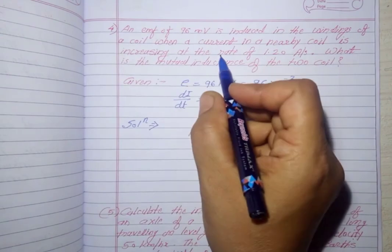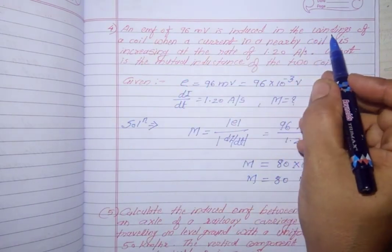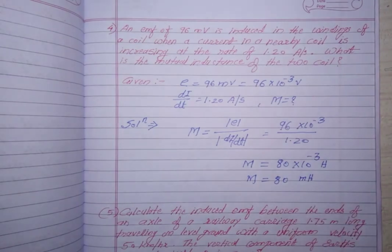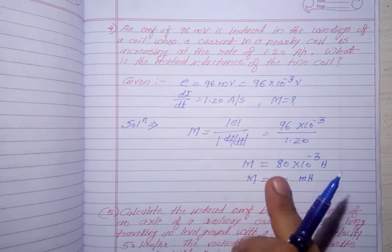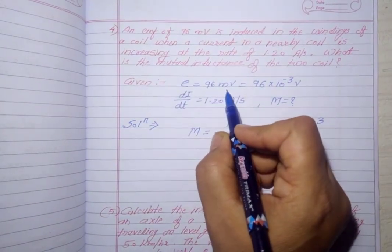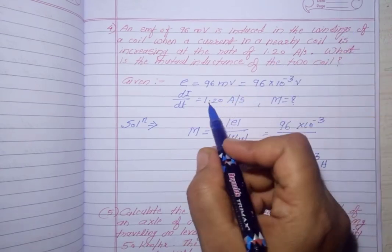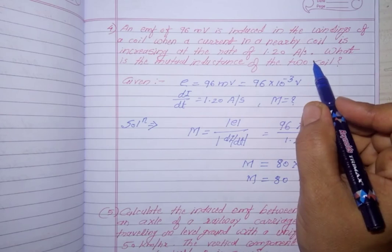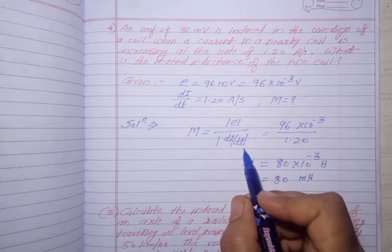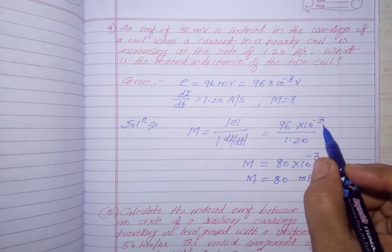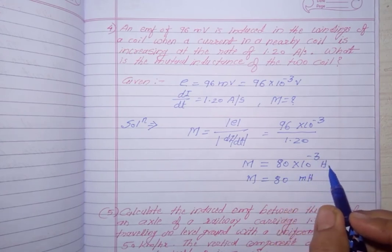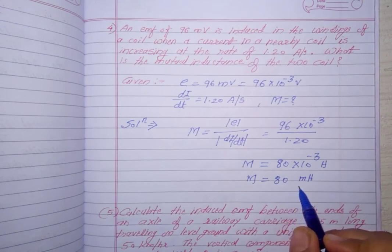Question number 4 is a problem: an EMF of 96 mH is induced in the windings of a coil when the current in a nearby coil is increased at the rate of 1.20 ampere per second. What is the mutual inductance of the coil? Given: induced EMF = 96 mV, rate of change of current dI/dt = 1.20 A/s. Using the formula M = EMF divided by rate of change of current: M = 96 × 10⁻³ / 1.20 = 80 × 10⁻³ henry, or M = 80 mH.